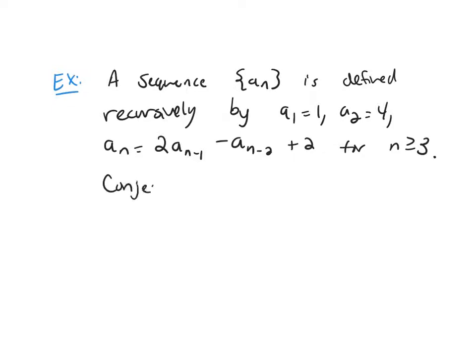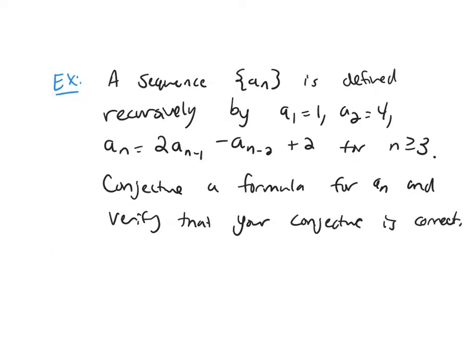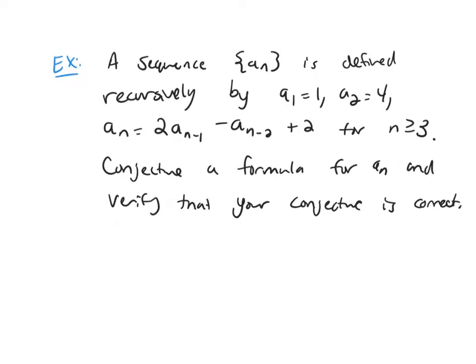Conjecture a formula for a_n and verify that your conjecture is correct. So the first thing we're going to do is write out some of the terms in this sequence. The first one we're told a₁ = 1 and a₂ = 4.